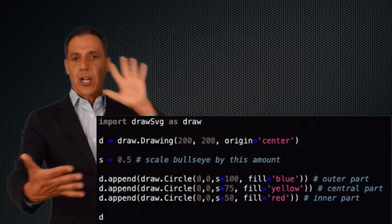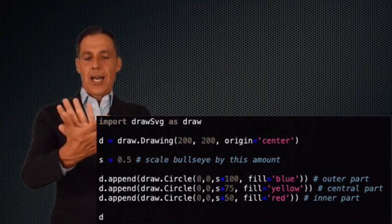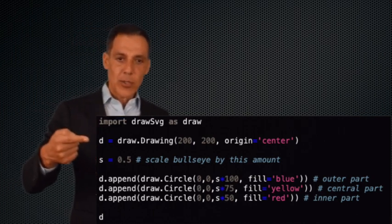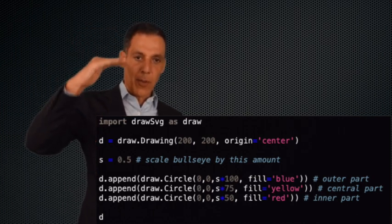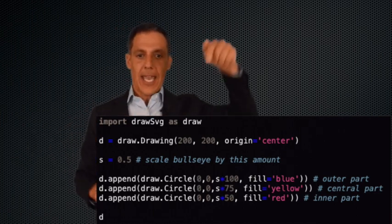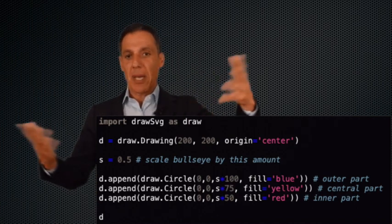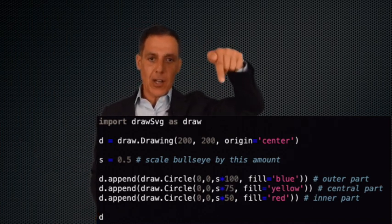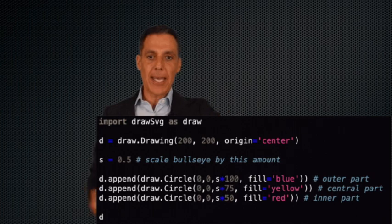Blue on the bottom, yellow on top, red on top of that. Notice that the radius goes from 100, that's the big one, to 75, to 50. They're each centered at the origin, 0, 0. I could have put them anywhere I wanted.